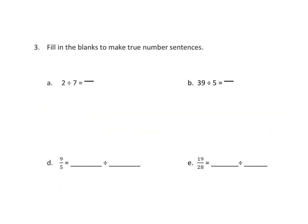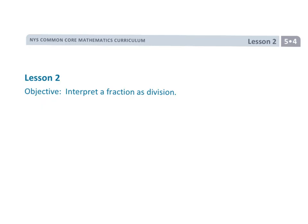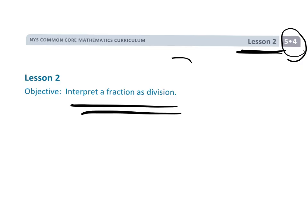Now we'll dispense with the manipulatives and switch over to the algorithm. Fill in the blanks: 2 divided by 7 is 2 sevenths; 39 divided by 5 is 39 fifths; 9 fifths is 9 divided by 5; and 19 twenty-eighths is 19 divided by 28. That is Grade 5, Module 4, Lesson 2 — interpreting fractions as division.